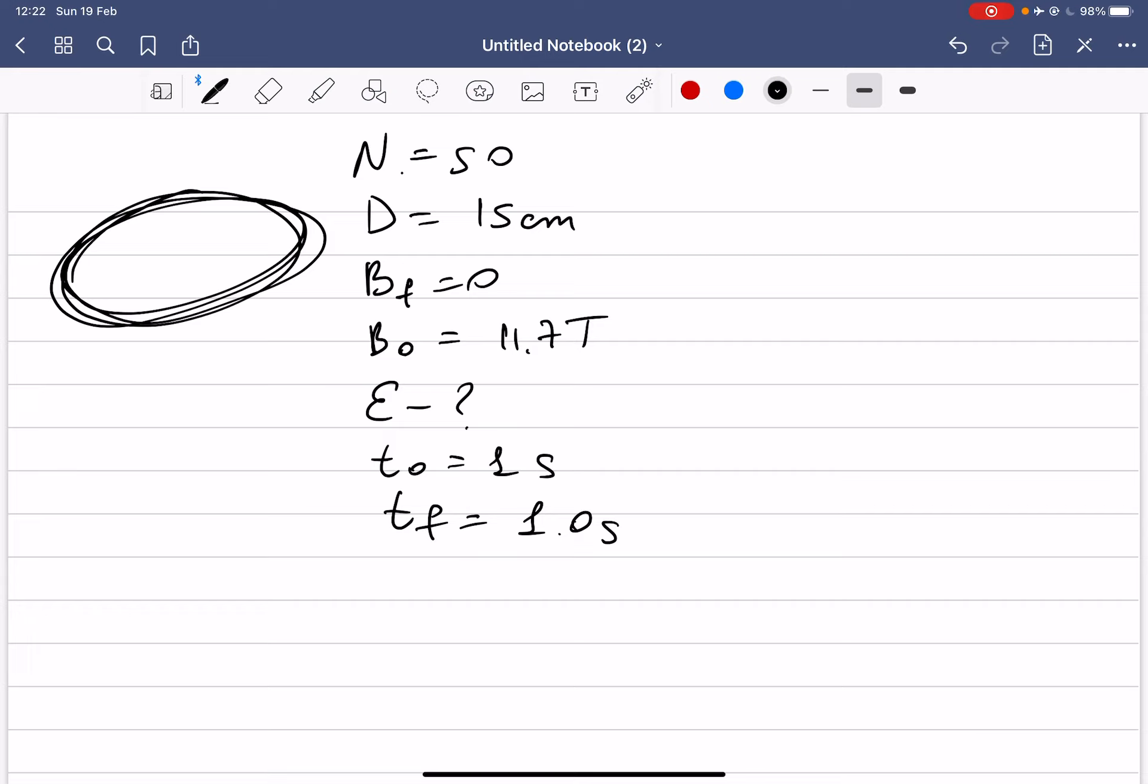Okay, so how can we find it? First of all, we know that induced EMF in the coil is basically equal to negative number of turns times magnetic flux dΦ/dt.